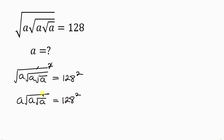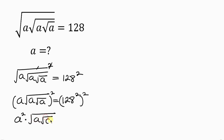Now let's get rid of this square root by also taking the square of both sides. We have A raised to the power of 2, times the square root of A times the square root of A, all raised to the power of 2. On the right hand side, the powers multiply according to the law of indices, so we have 128 to the power of 4.